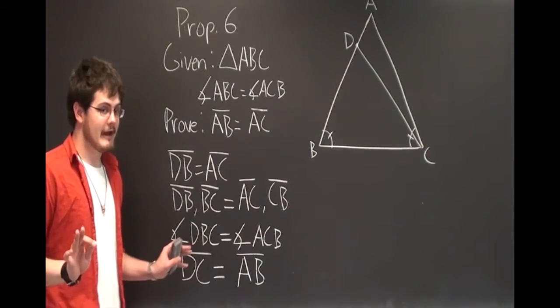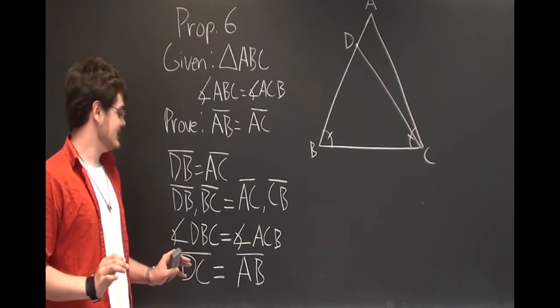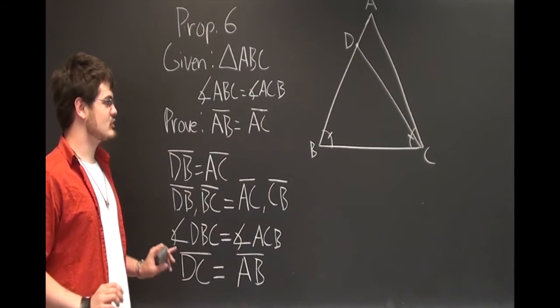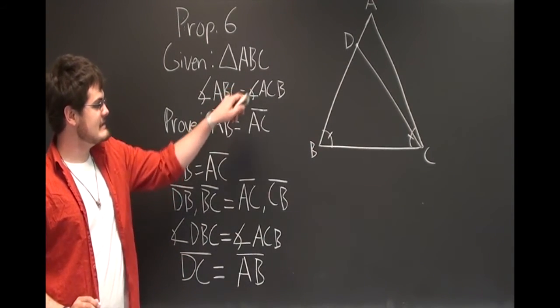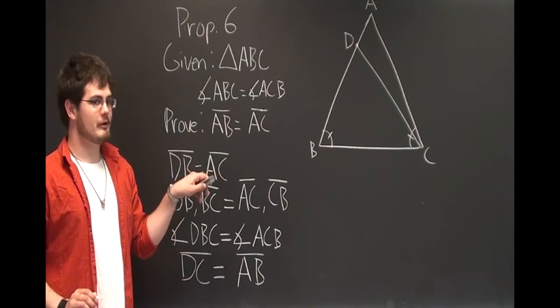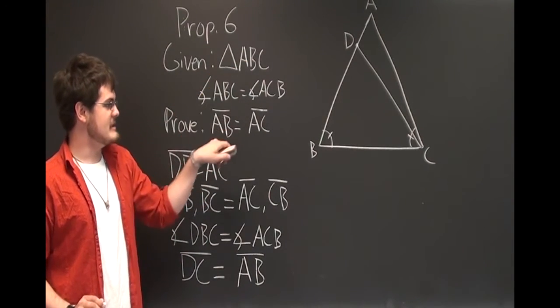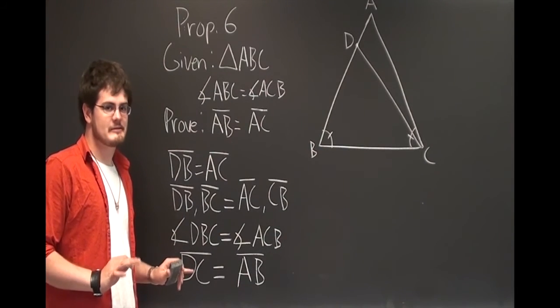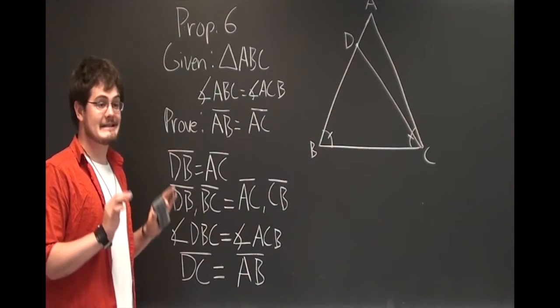And that's problematic, right? Because given all of these things, what does that tell us? That tells us that the triangle DBC is equal to the triangle ABC. Those triangles are different sizes. One of them is smaller than the other one. That's bonkers.